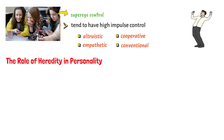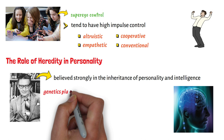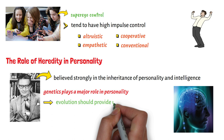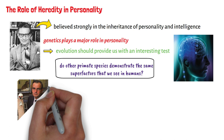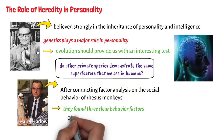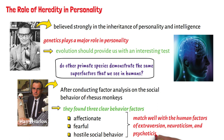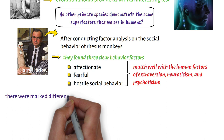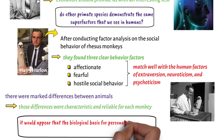The role of heredity in personality. Eysenck believed strongly in the inheritance of personality and intelligence. If genetics plays a major role in personality, then evolution should provide an interesting test: do other primate species demonstrate the same superfactors seen in humans? Eysenck examined this question in conjunction with Harry Harlow. After conducting factor analysis on the social behavior of rhesus monkeys, they found three clear behavior factors — affectionate, fearful, and hostile social behavior — matching the human factors of extroversion, neuroticism, and psychoticism respectively, suggesting a biological basis for personality superfactors.